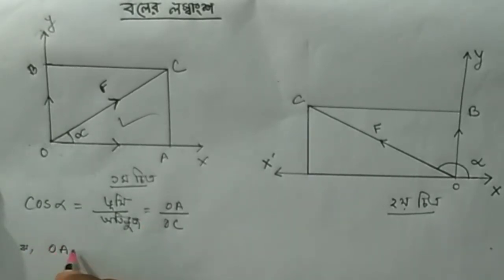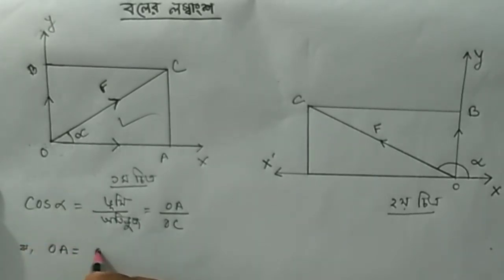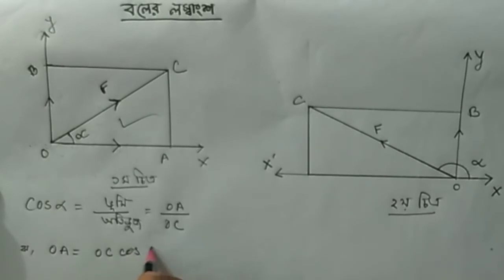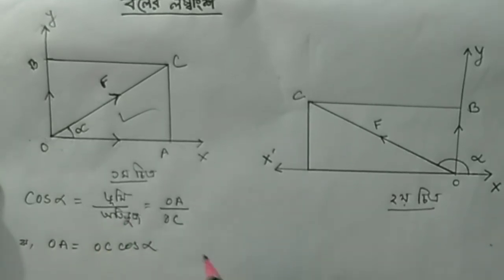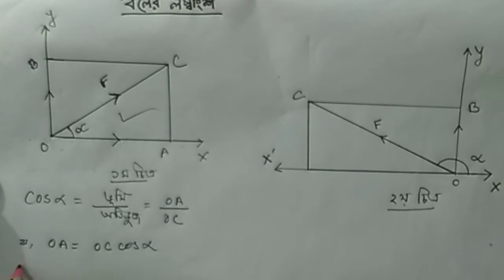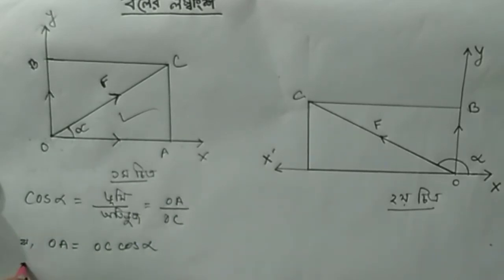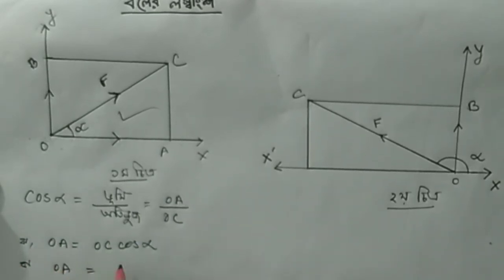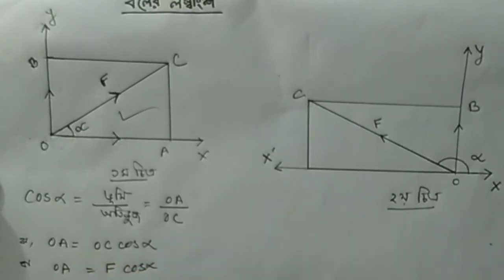AC over OC times cos alpha. So OC is equal to F, and OA is equal to F cos alpha.